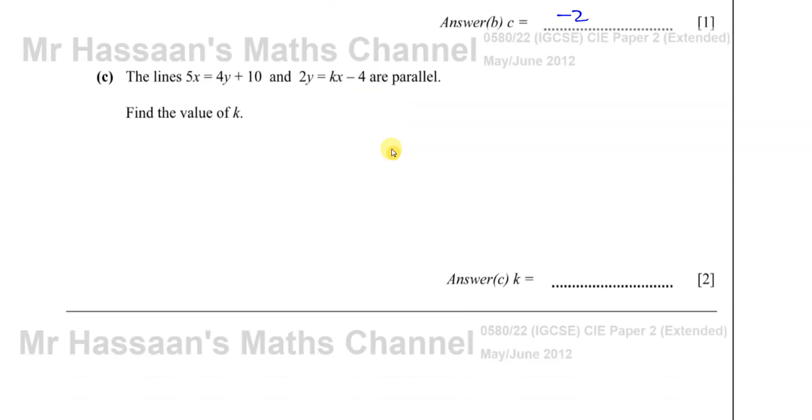Then part C, which is the question that was actually asked, says the lines 5x = 4y + 10 and 2y = kx - 4 are parallel. Find the value of k. So we know that when two lines are parallel, they have the same gradient.